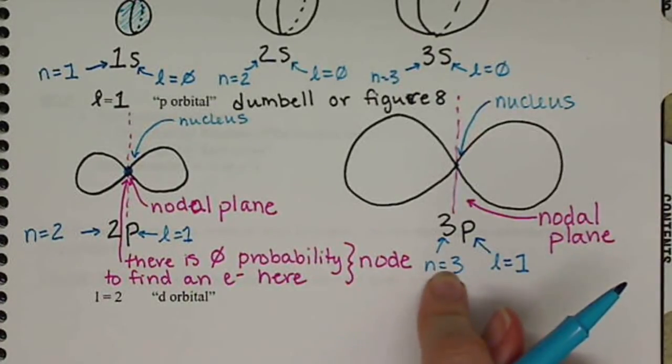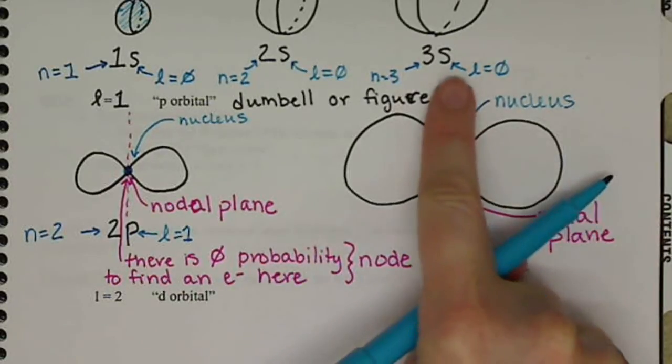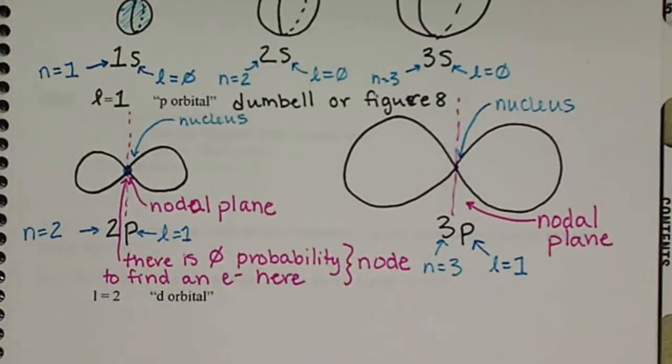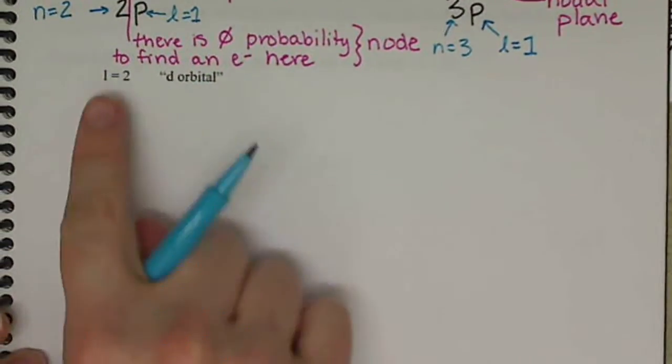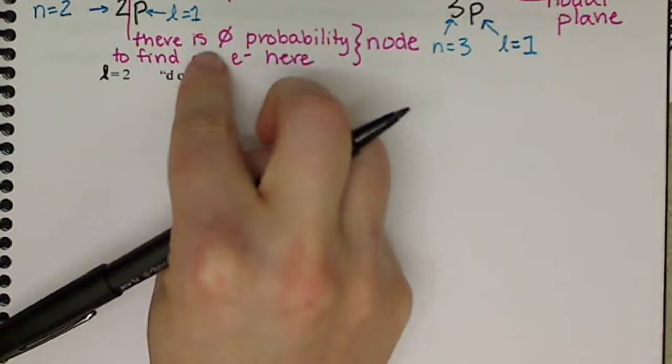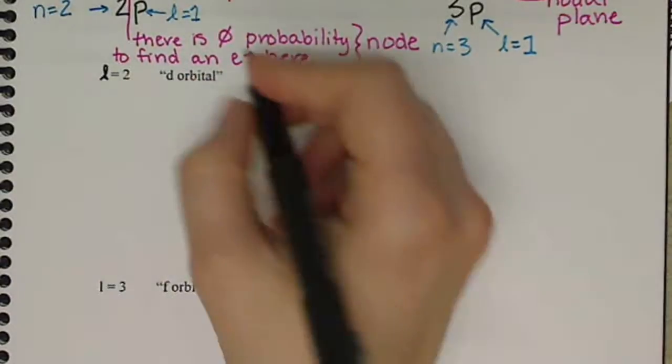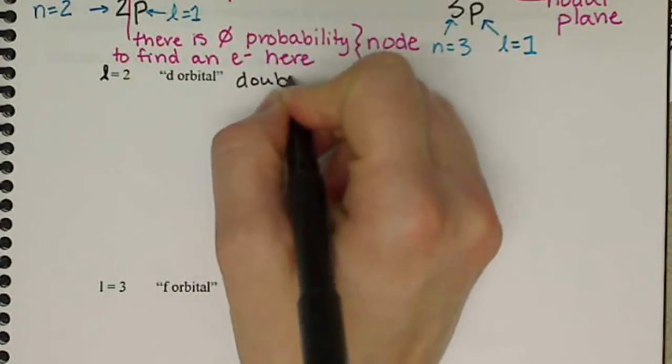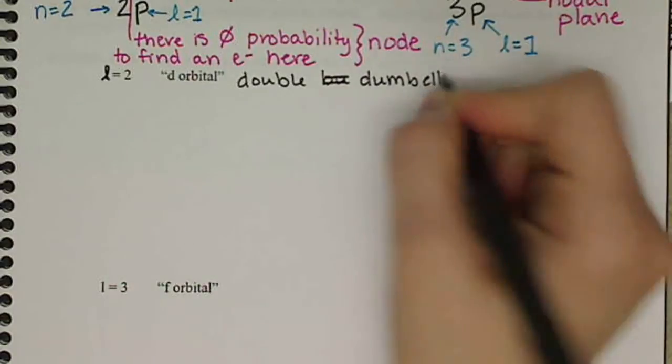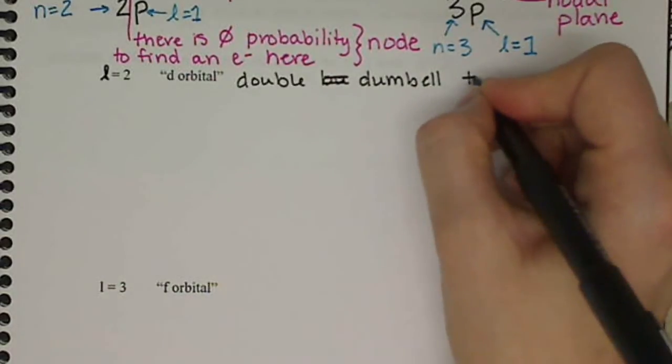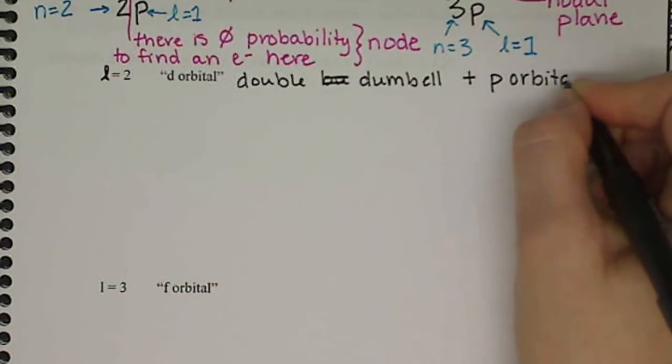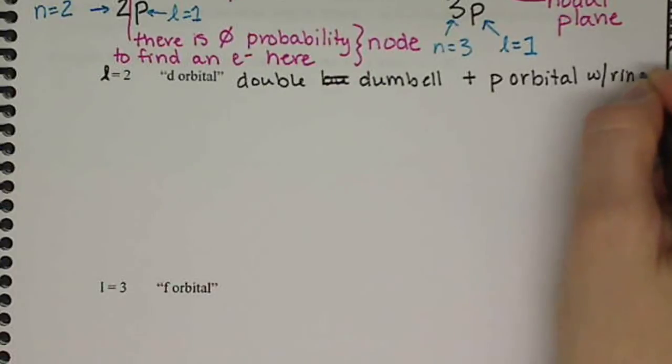When n equals 3, we have another possibility, so we can have an s-orbital when n equals 3. We can have a p-orbital when n equals 3. We can also have a d-orbital. So here we have l is equal to 2, this is a d-orbital, and essentially this is going to be a double dumbbell, plus it also has kind of a p-orbital with a ring.